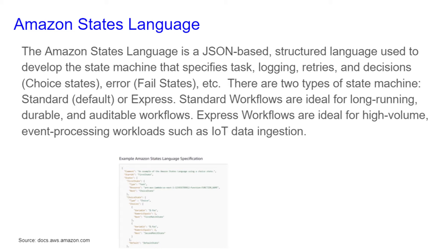There are two types of state machines: Standard or Express. Standard workflows are ideal for long-running, durable, and auditable workflows. Express workflows are ideal for high-volume, event-processing workloads such as Internet of Things data ingestion.